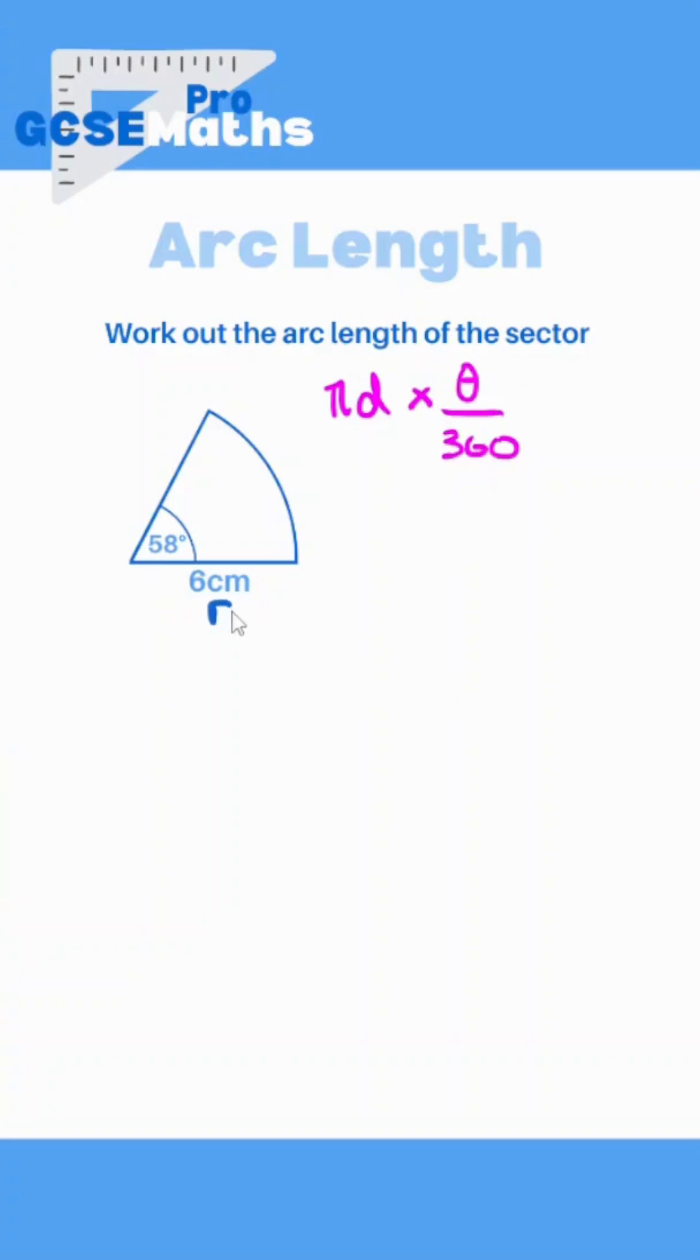Here we've got 6cm which is obviously the radius, so I want the diameter. The diameter is 2 times the radius, so that's going to be 12, isn't it? So I can write that as 12pi times by the angle which is 58 over 360.